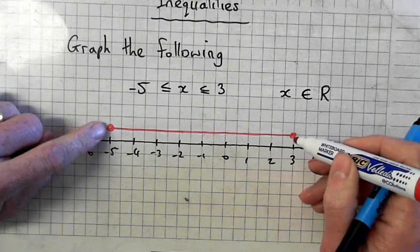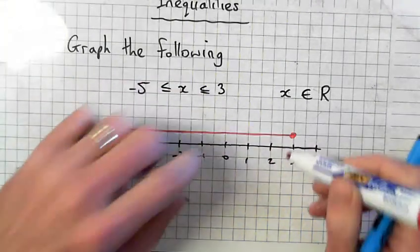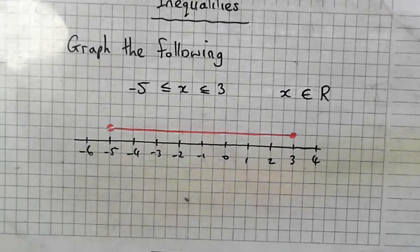Those two, minus 5, including minus 5, all the way up to 3 is included. Every number, every number is included.